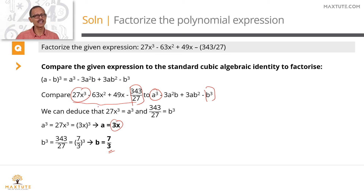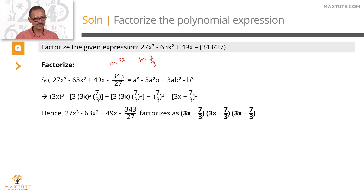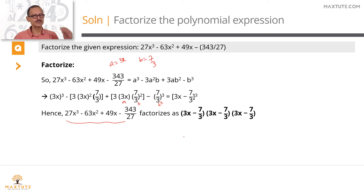We know that the original expression and the expanded form of (a-b)³ will have to map with each other. So trying to rewrite the original — 27x³ is nothing but (3x)³. Then minus 3·(3)²·(7/3), plus 3·(3x)·(7/3)², minus (7/3)³ — this is exactly (3x - 7/3)³. This term expands into this, which means that the original is the same as (3x - 7/3)³, so it factorizes as (3x - 7/3)·(3x - 7/3)·(3x - 7/3).